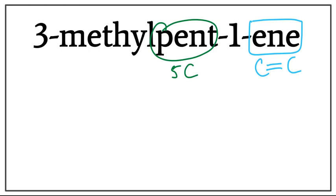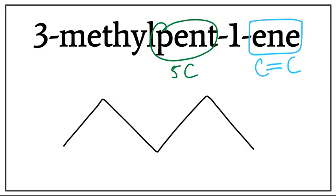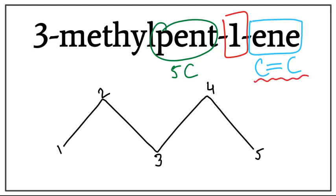Let's draw the five-carbon chain. A trick to draw this is that you always count till one less than the number of carbons you want to draw: 1, 2, 3, 4. Let's number the carbons: 1, 2, 3, 4, and 5. This 1 tells us the location of the double bond in the carbon chain, meaning the double bond is present between the first and the second carbon.